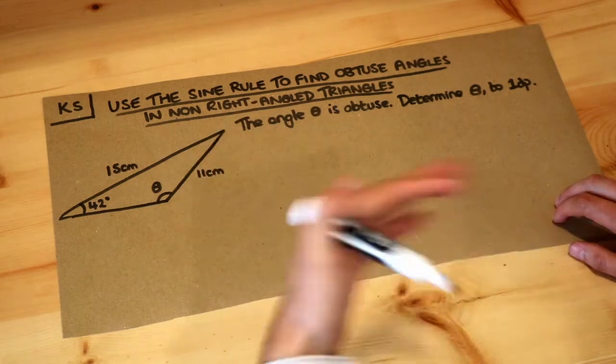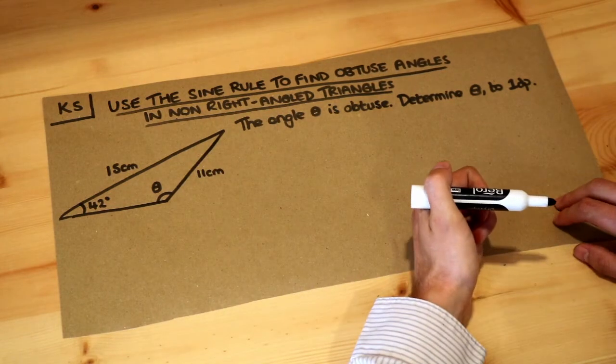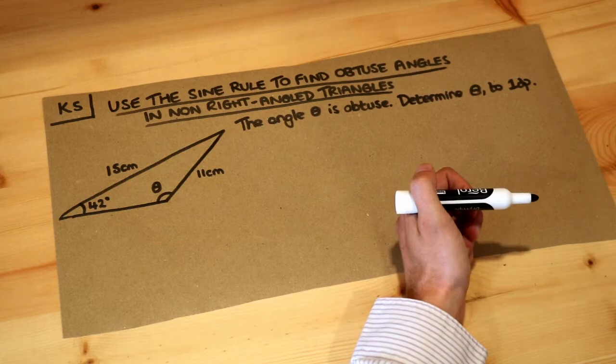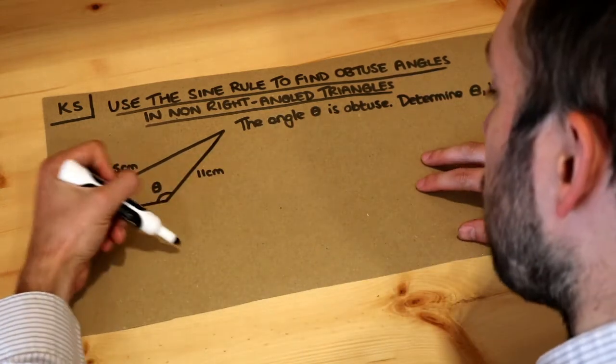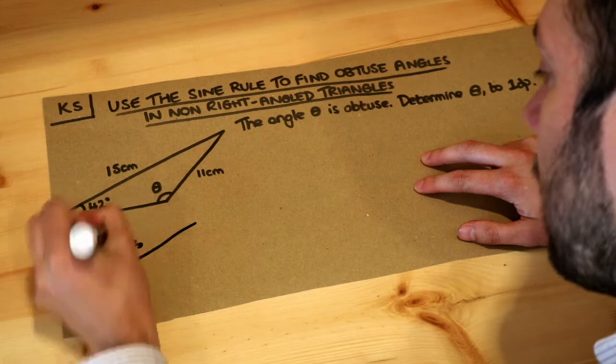Now the method is the same, it's just there's something extra we're going to have to do at the end. The ambiguity is this: if I just draw out this triangle again with the sides, we've got 15, we've got this angle of 42, and we've got this side of 11.